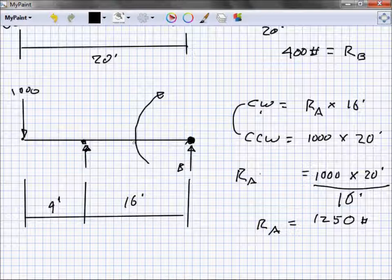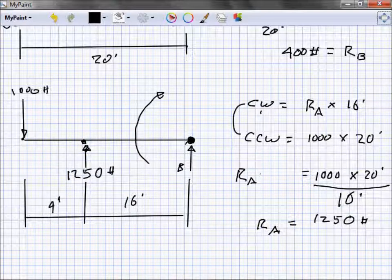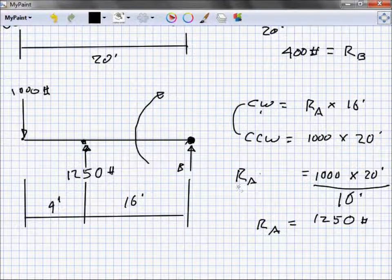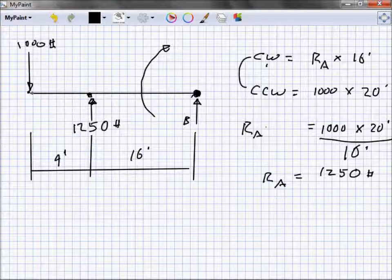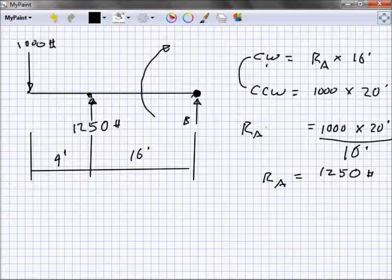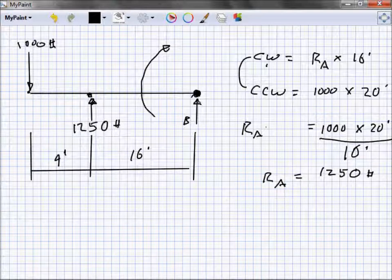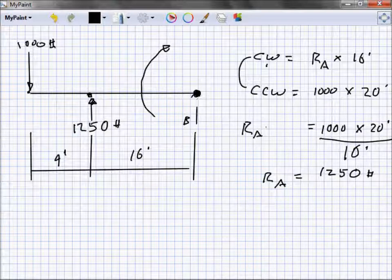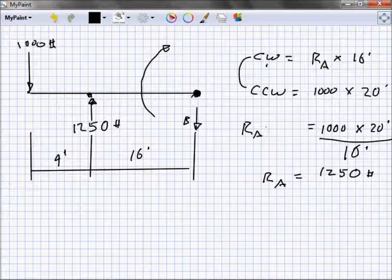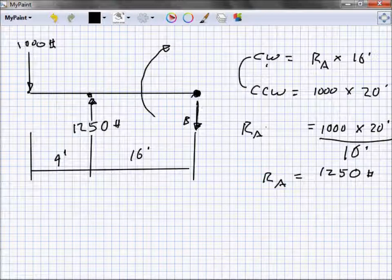So we know that's 1,250 pounds. Now we got a little bit of a problem. We look at our diagram and say, well I got 1,000 pounds coming down, I got 1,250 pounds coming up. Well that can't be right. I can't have 1,250 plus something equal to 1,000. No big deal - my assumption on this arrow is wrong. This arrow should have been like that. No biggie.